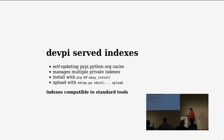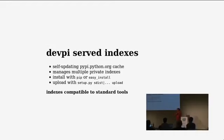DevPI server indexes — one of the main purposes at the beginning, before PyPI Python.org grew a content delivery network, was that you can have a local self-updating PyPI cache. You basically work against your local index. If a package is not there, it goes off to PyPI Python.org, grabs it, and the next time you don't even need to be online to satisfy everything completely offline from your local cache.